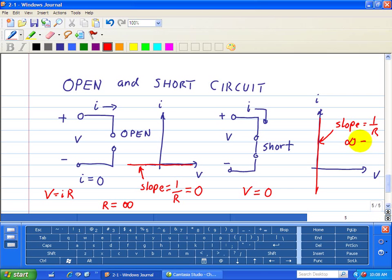But the slope in here is really infinite. So infinite slope, which is equal to one over R, which means R is equal to zero. So the resistance is zero, which implies that the voltage is zero.